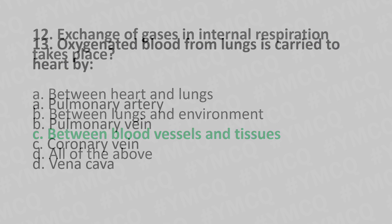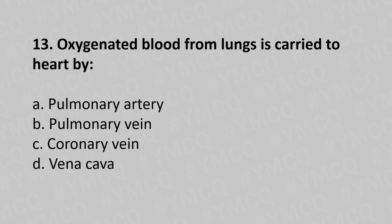Moving to question number thirteen. Oxygenated blood from lung is carried to heart by: option a, pulmonary artery; option b, pulmonary vein; option c, coronary vein; option d, vena cava. And the answer is option b, pulmonary vein.